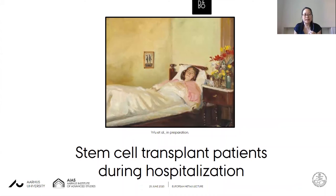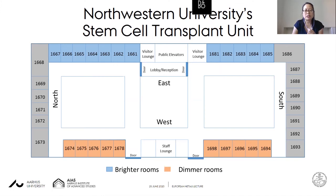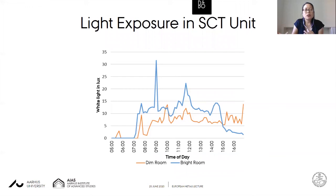This led me to think about other ways of looking at the association between light and symptoms in cancer patients — specifically the light exposure people receive during hospitalization without any additional lighting devices. We noticed at Northwestern University's stem cell transplant unit that east-facing rooms were considerably lighter than west-facing rooms, simply due to room orientation. Physicians and nurses commented that the west-facing rooms were very dark and wondered whether patient symptoms might differ between them.